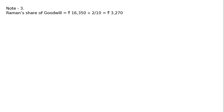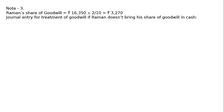Working Note 3: Raman's share of goodwill = Rs. 16,350 multiplied by Raman's profit share of 2/10 = Rs. 3,270. Journal entry for treatment of goodwill, since Raman does not bring his share of goodwill in cash: Raman's Capital Account debited Rs. 3,270.